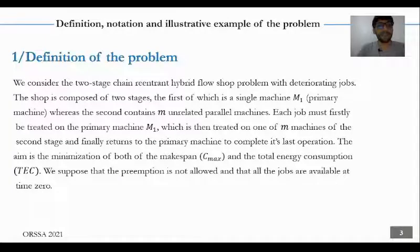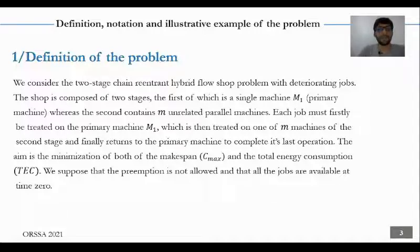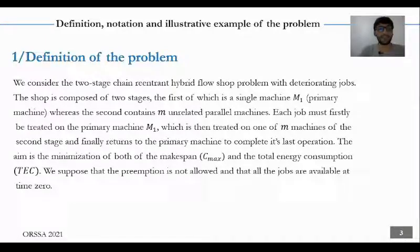We start by giving the definition of our problem. We consider the two-stage chain-reentrant hybrid flow-shop problem with deteriorating jobs. The shop is composed of two stages: the first is a single machine M1, which is the primary machine, whereas the second contains M unrelated parallel machines. Each job must be treated on the primary machine M1, then treated on one of the M machines of the second stage, and finally returns to the primary machine to complete its last operation. The aim of our work is the minimization of both the makespan and the total energy consumption.